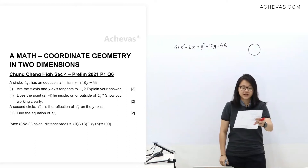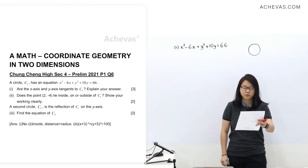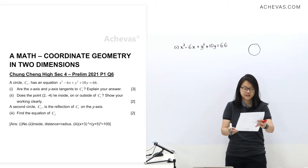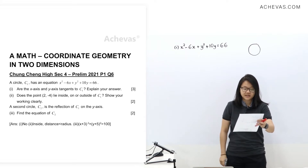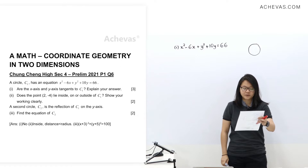Let us take a look at Chong Ching Hai Secondary for Prelim 2021 Paper 1 Question 6. Circle C1 has an equation x squared minus 6x plus y squared plus 10y equals 66.